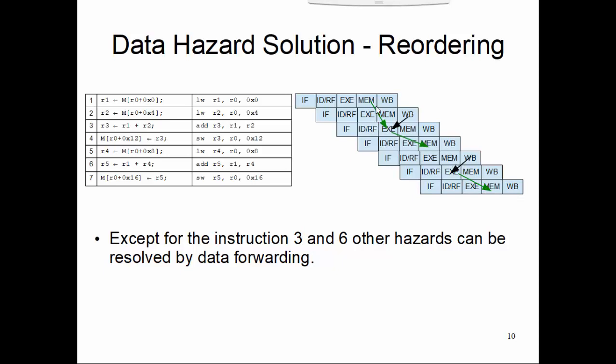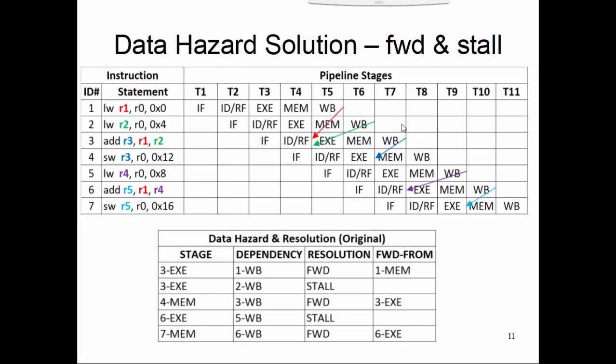We still need to solve two data hazards that are not resolved by data forwarding, so we need stalls. Let us now formalize this idea on a spreadsheet or table so it can be done on paper. It is the same problem, just put in a table format where one column has instruction IDs, another has the instruction statements, and then the cycle columns — t1, t2, t3 up to t11 — where we place the pipeline stage names like IF, ID, RF, EXE, MWB in a pipeline fashion.